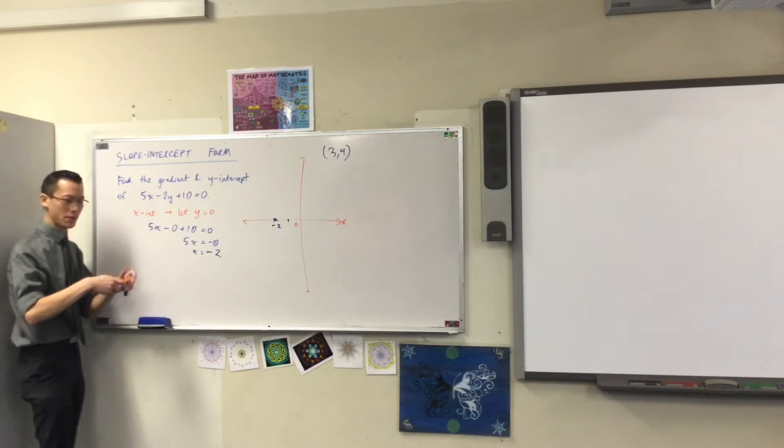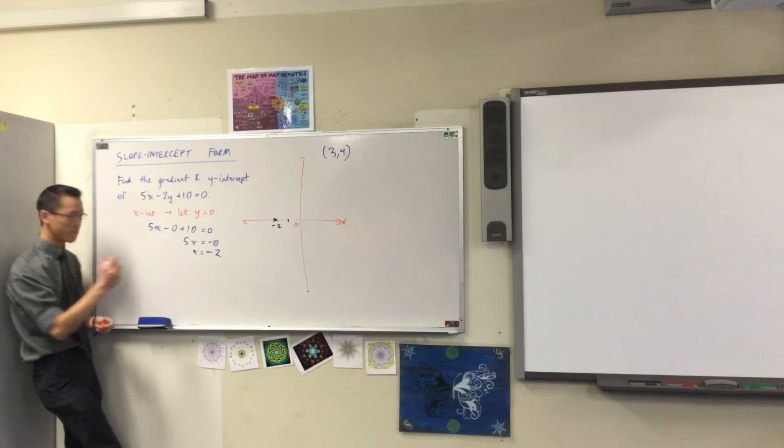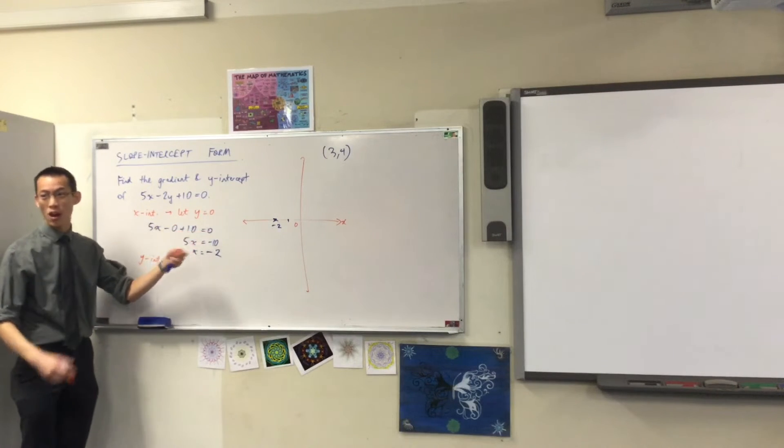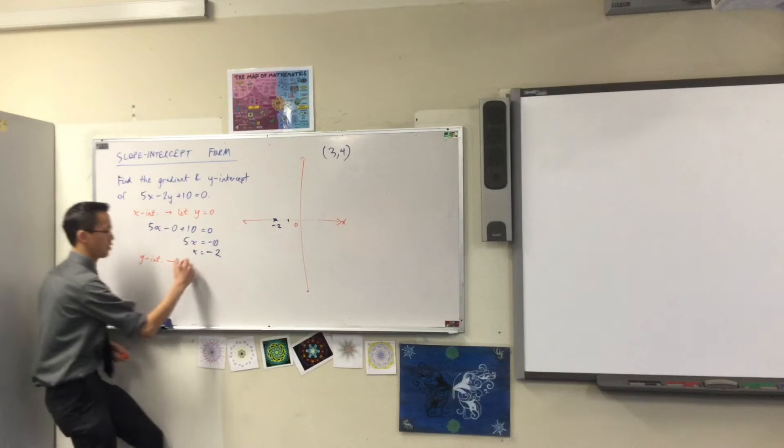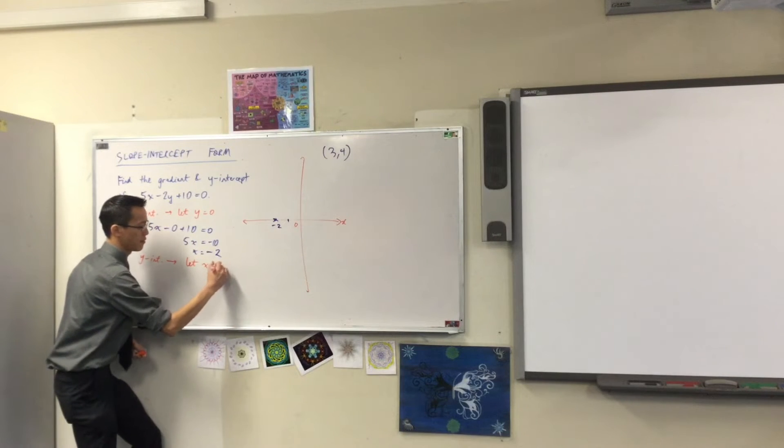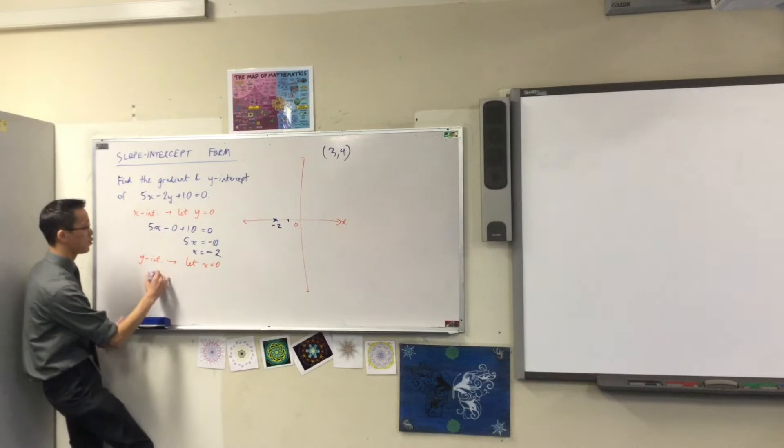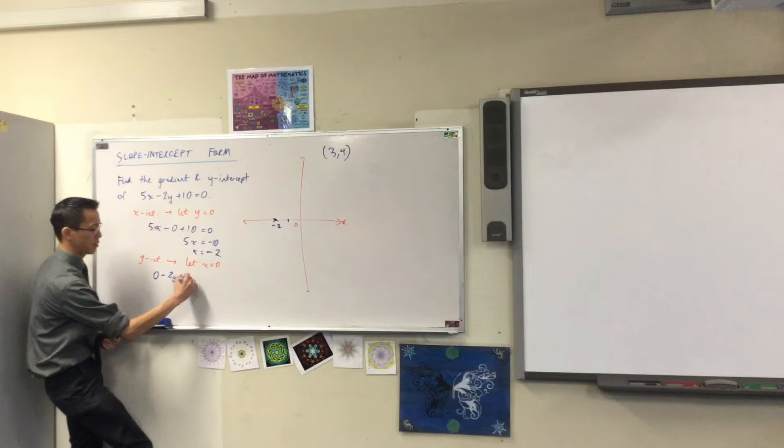I found the x's intercept, so now the other thing I need to find is... Cool. Let's do that. To find that, instead of letting y equals zero, I let x equals zero. Have a look, what's going to happen? Zero minus 2y plus 10.